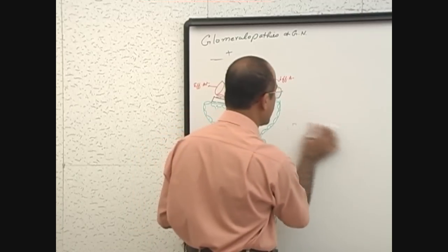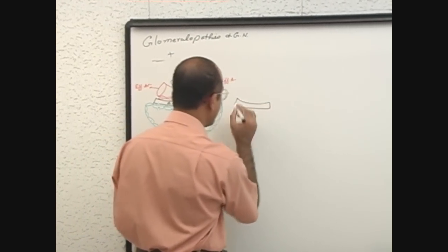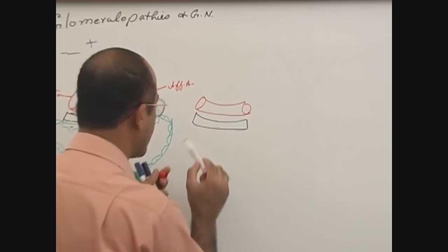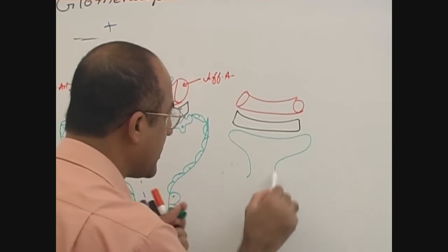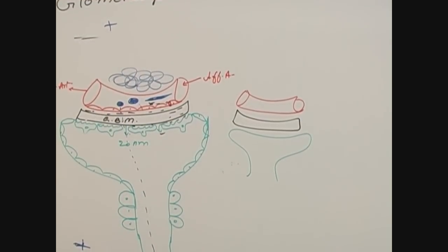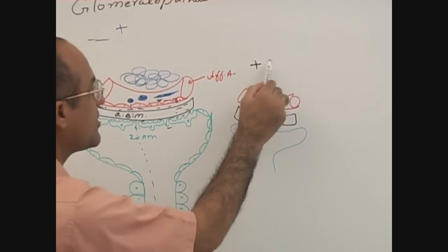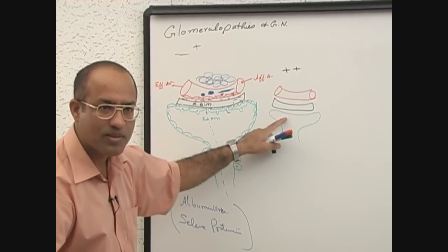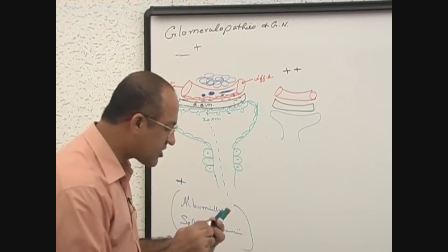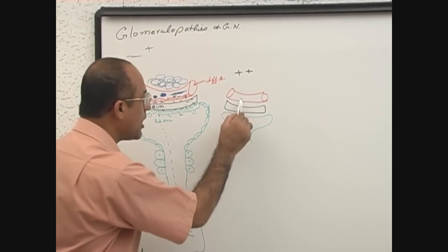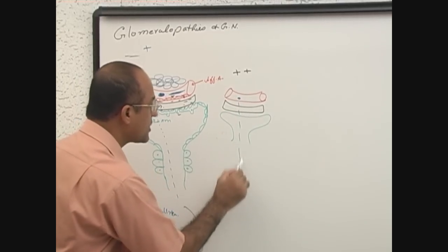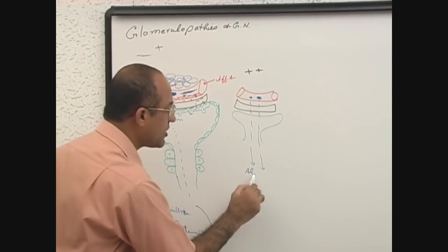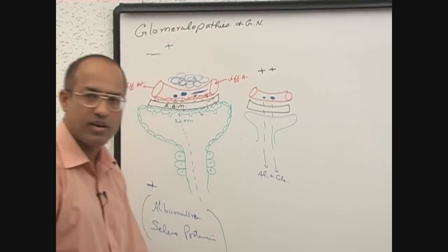Now let's consider another patient where injury to the glomerulus structure is more than the first case — let's say plus 2 injury. It means the membrane will become more leaky, and this time the patient will have not only albumin coming down but also globulin coming down. So albumin is there plus globulin is there.